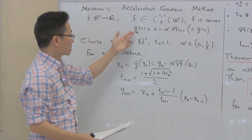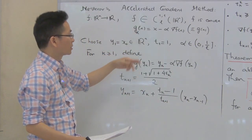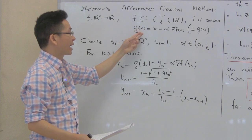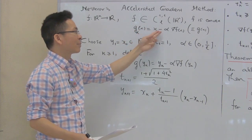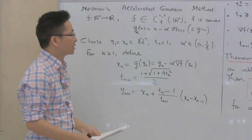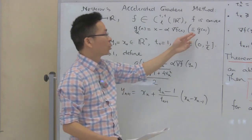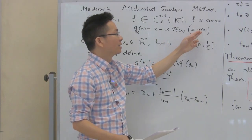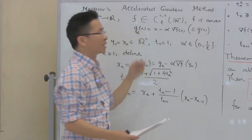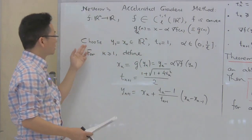Let us define T_alpha as follows. T_alpha of x is x minus alpha times the gradient of f at x. For simplicity, we're going to use T(x) instead of T_alpha(x).